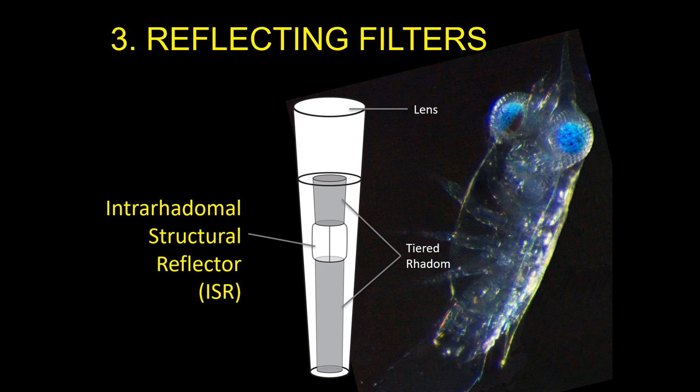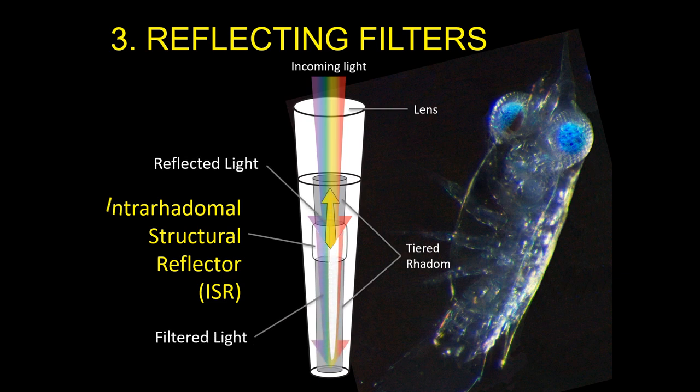In compound eye units that contain these reflecting filters, light entering the eye is simultaneously reflected and filtered onto a tiered rhabdom by a specialized photonic structure called the inter-rhabdomal structural reflector, or ISR.